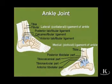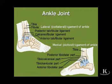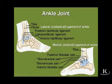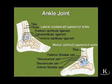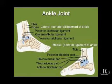And lastly, we have the ankle joint, and the collateral ligaments of the ankle are on the medial and lateral sides. On the lateral side, we have ligaments going from the fibula to some of the tarsal bones, and on the medial side, going from the tibia to several of the tarsal bones.